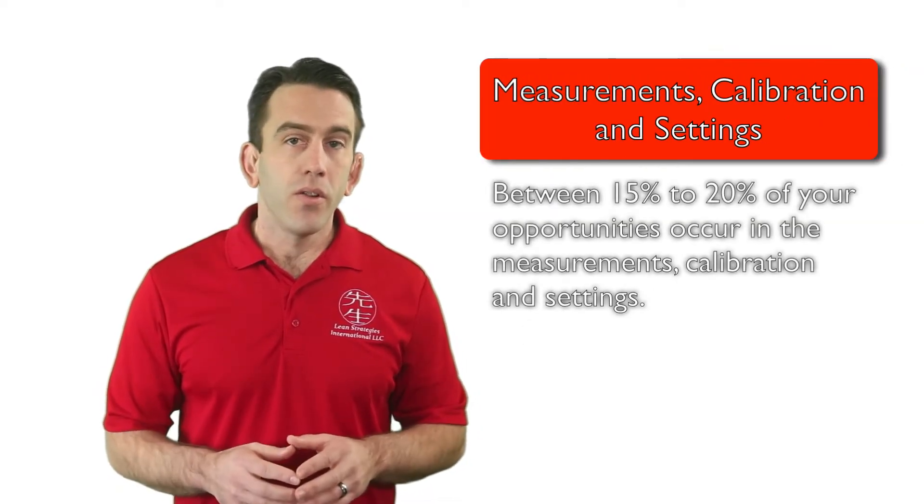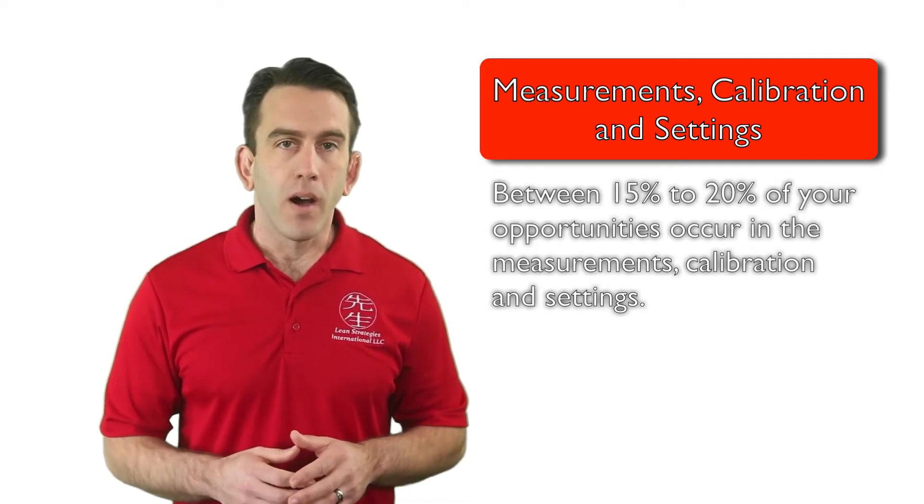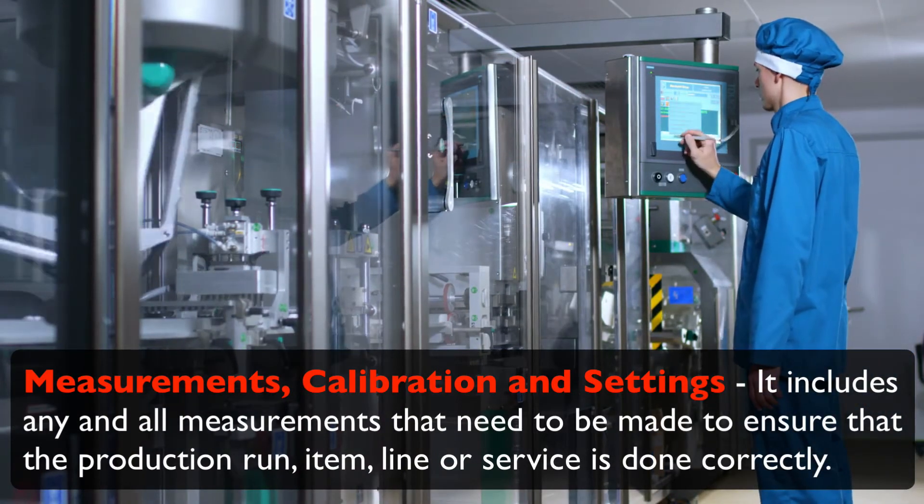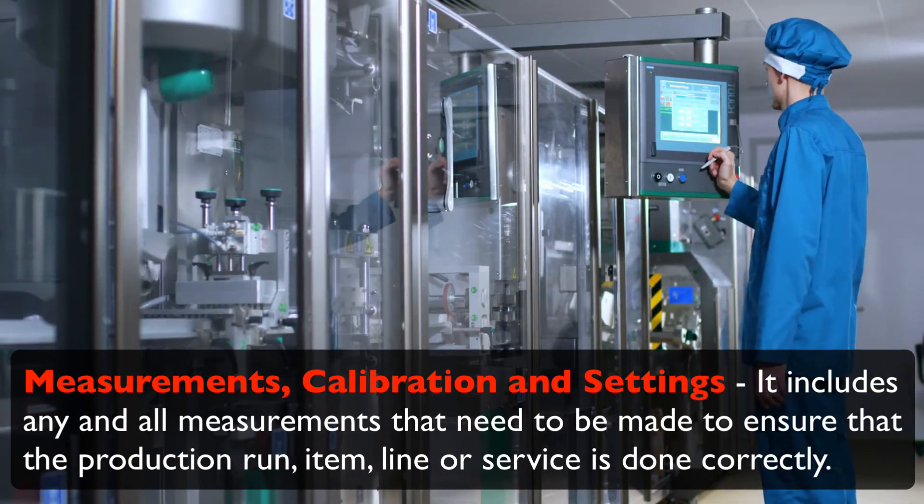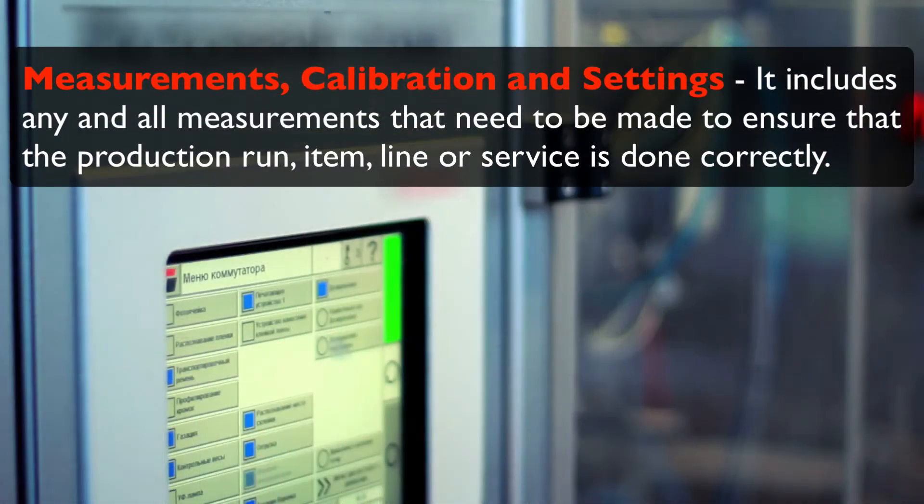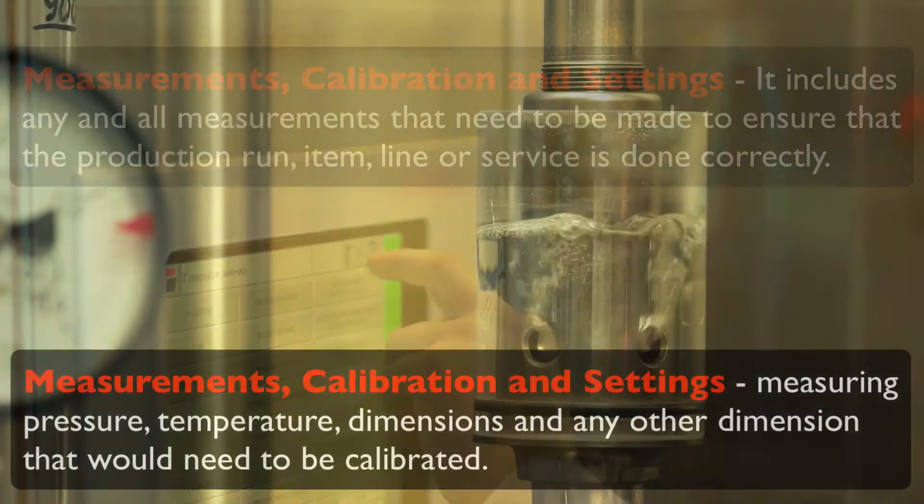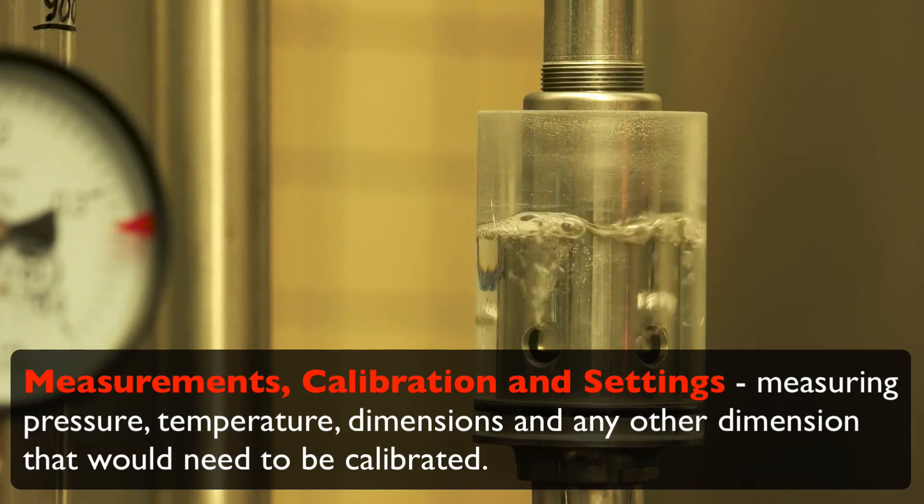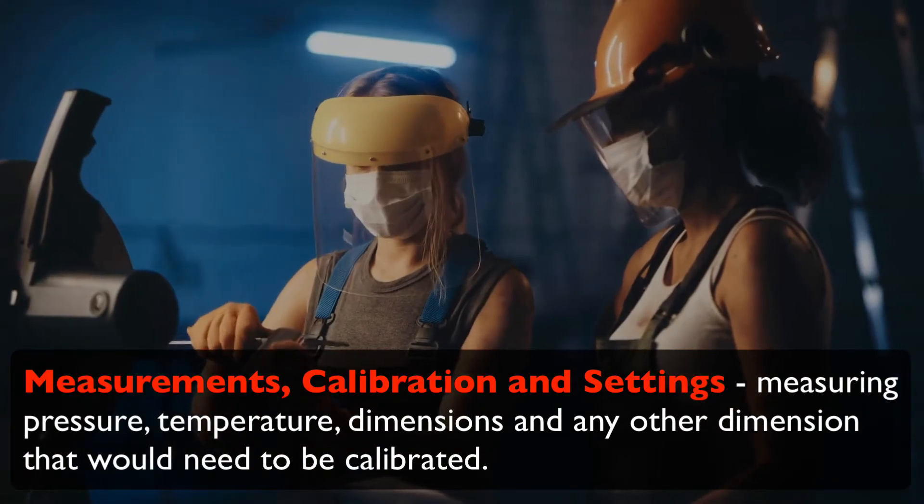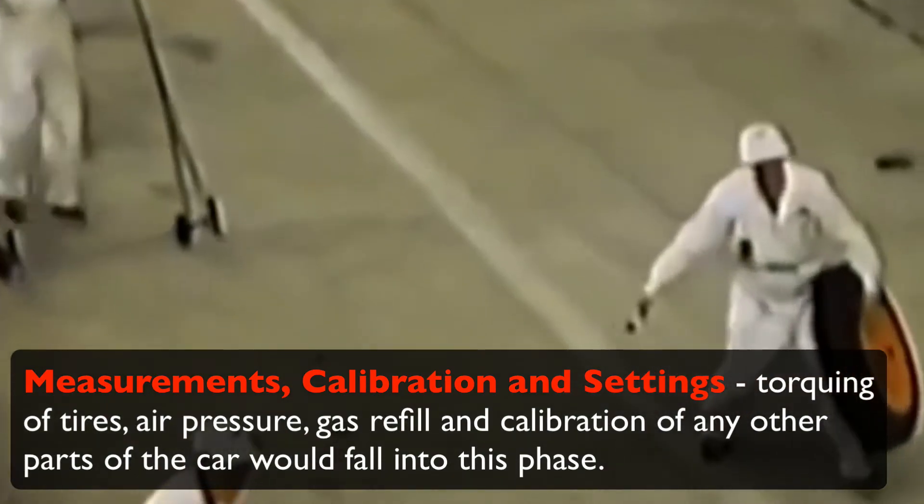The third phase of a traditional setup is about 15 to 20% of the traditional setup process. This phase includes measuring, calibration, and establishing correct settings. It includes any and all measurements that need to be made to ensure that the production run, item, line, or service is done correctly. This may include, but is not limited to, measuring pressure, temperature, dimensions, and any other dimension that would need to be calibrated or checked.